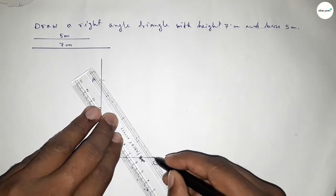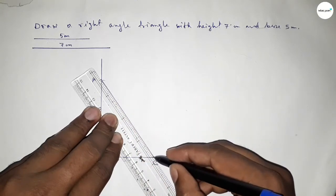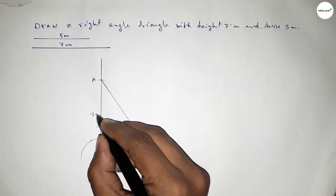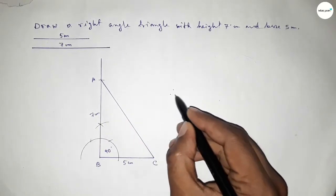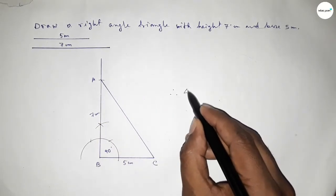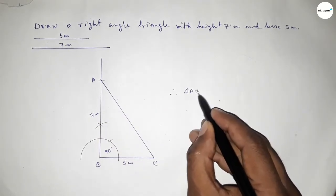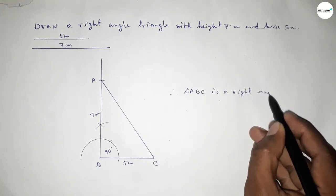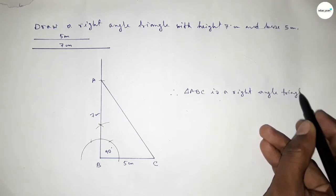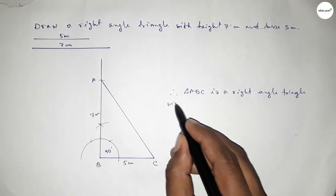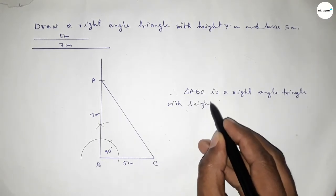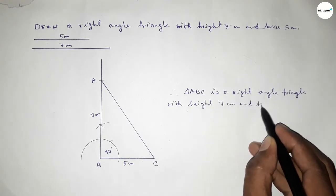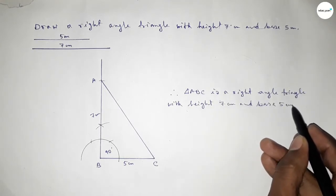Joining A and C to get triangle ABC. This side is 5 centimeter and this side is 7 centimeter. Therefore, triangle ABC is a right angle triangle with height equal to 7 centimeter and base equal to 5 centimeter.